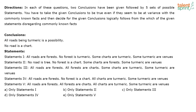In this question, the conclusions include: all roads being turmeric is a possibility, and no road is a chart. Since there is a negative conclusion — no road is a chart — you generally need negative statements in the question to arrive at that. Looking at option 5, the statements only contain all and some terms — no negative statements — so you can never get a negative conclusion like no road is chart. Eliminate this option directly.